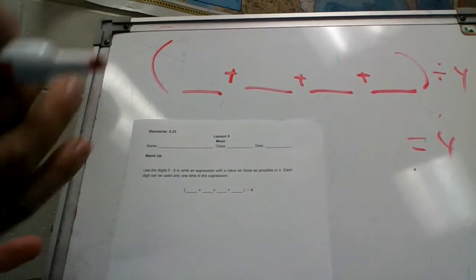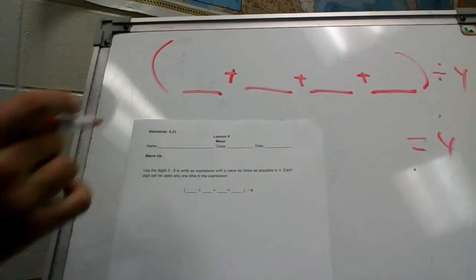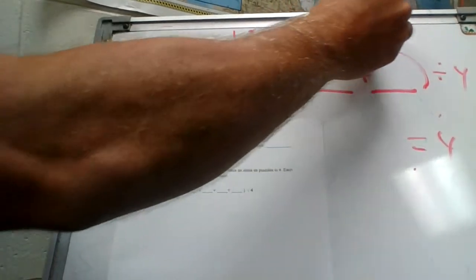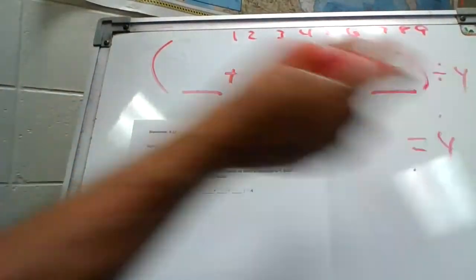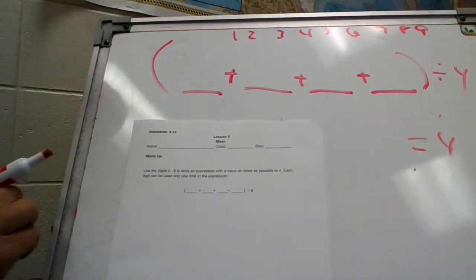Okay, so you can only use one digit. We got one, two, three, four, five, six, seven, eight, nine. You can only use the digits one time, so there are these numbers, okay?